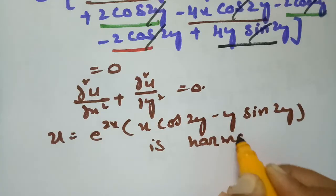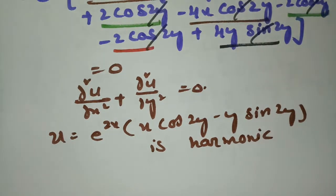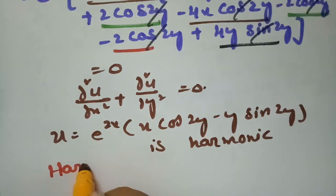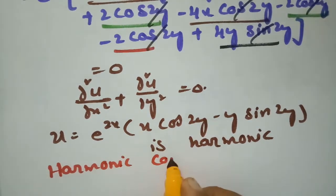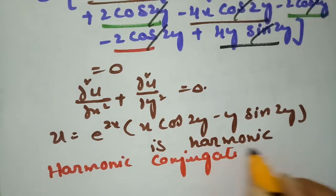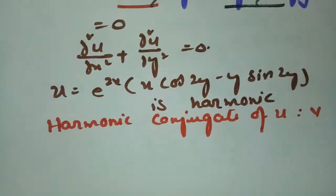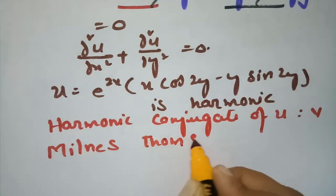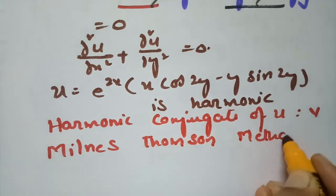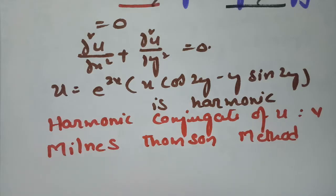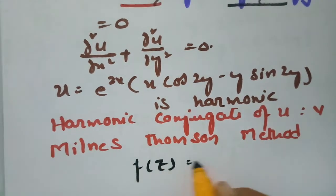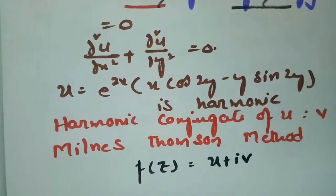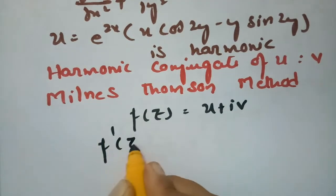Now I am going to use Milne-Thomson method to find the harmonic conjugate v. According to the Milne-Thomson method, f(z) = u + iv, so f'(z) = ∂u/∂x + i·∂v/∂x.